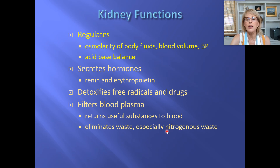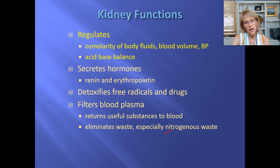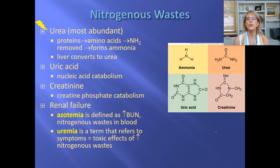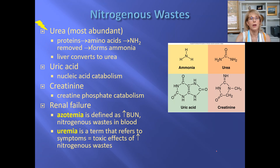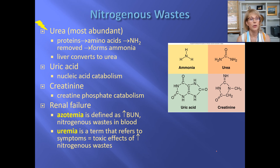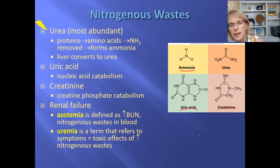When it comes to waste products, the kidney is particularly important for removing what are known as nitrogenous wastes. Nitrogenous wastes are waste products that have nitrogen in them — biomolecules with nitrogen that we're not capable of exhaling, so we need a different way to get rid of them, and the way humans do it is through the kidneys. The four main nitrogenous wastes are ammonia, urea, uric acid, and creatinine.